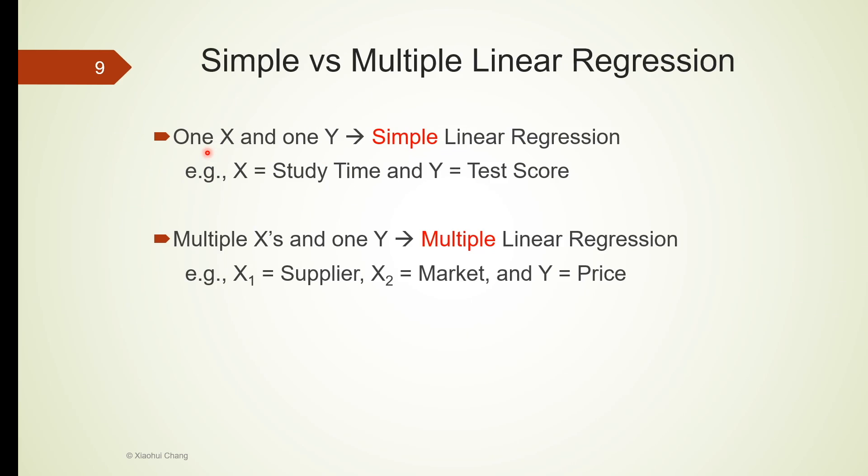When the number of independent variables in a regression setting is one, so that means there is only one x, it is called simple linear regression. This is the simplest case among all linear regression models. When the number of independent variables in a regression setting is two and above, it is called multiple linear regression.